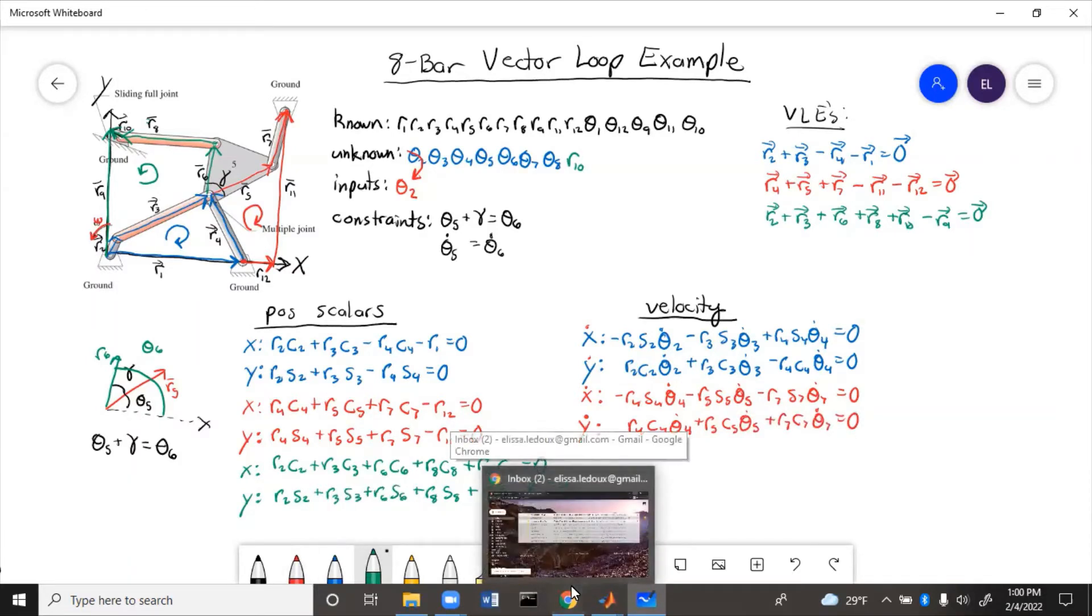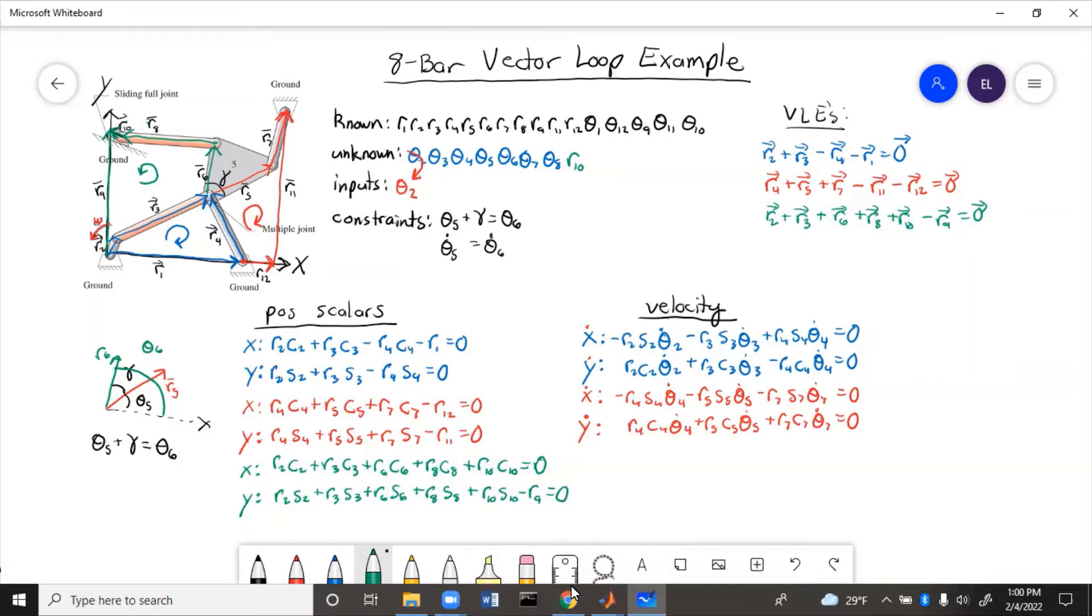Now finally, for the green loop, r9 is not going to have a derivative, and r10 is going to actually have that part be derivative and not the theta because the angle of r10 does not change, but the length does because r10 is the slider. So we'll end up with an r10 dot.